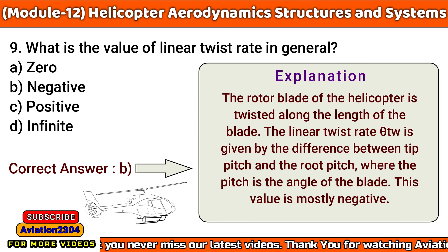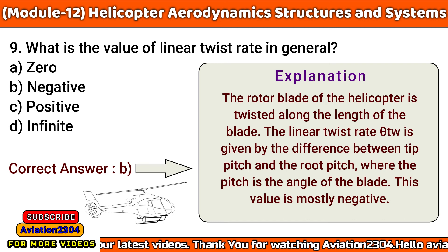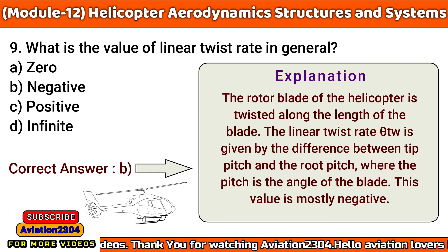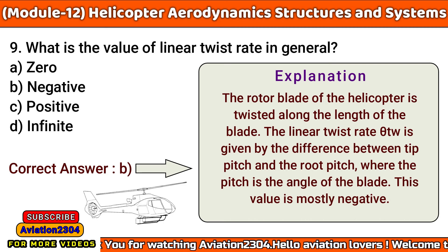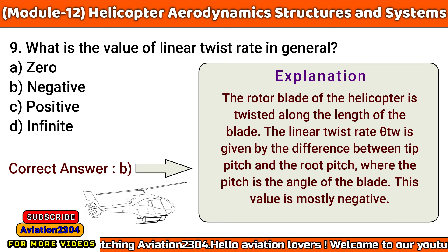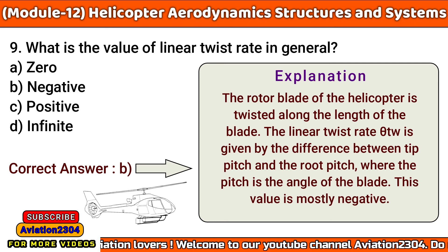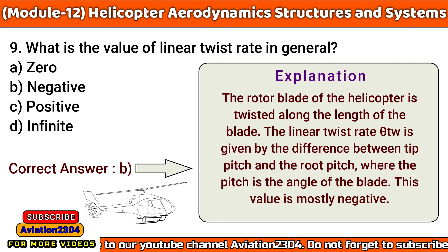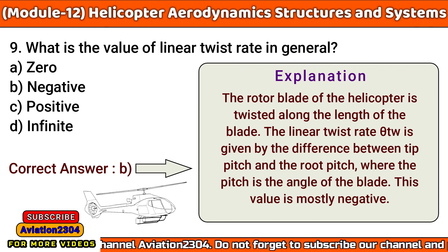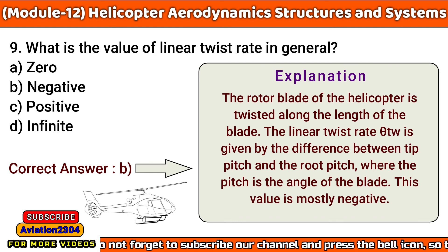What is the value of linear twist rate in general? A. Zero, B. Negative, C. Positive, D. Infinite. The correct answer is B. The rotor blade of the helicopter is twisted along the length of the blade. The linear twist rate is given by the difference between tip pitch and root pitch, where the pitch is the angle of the blade. This value is mostly negative.